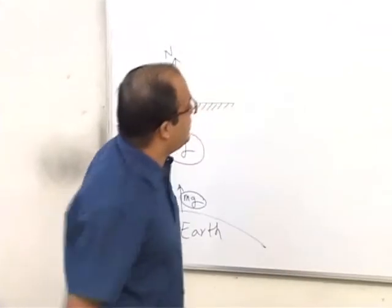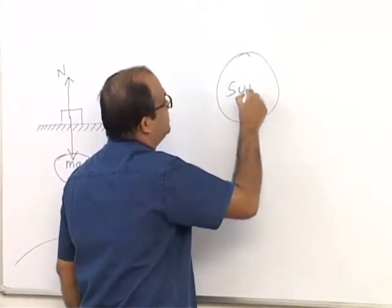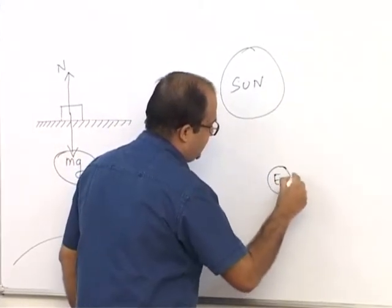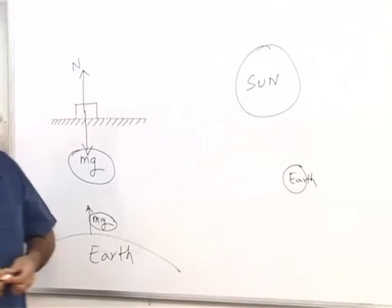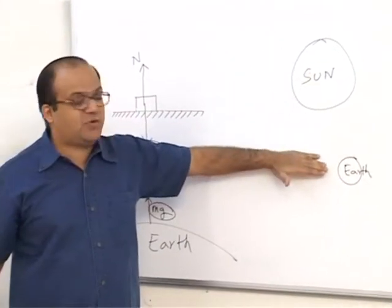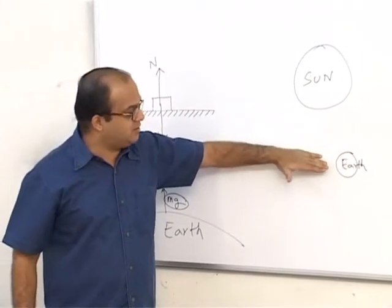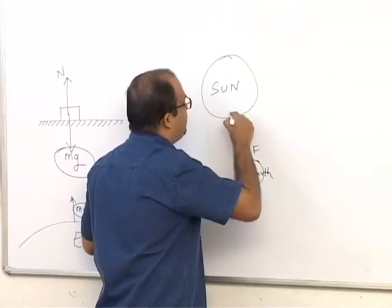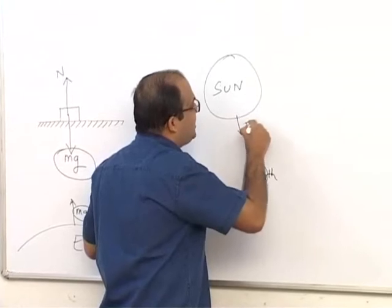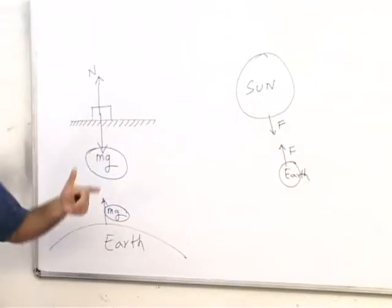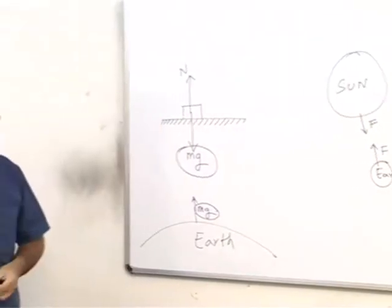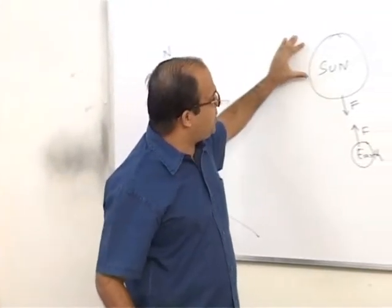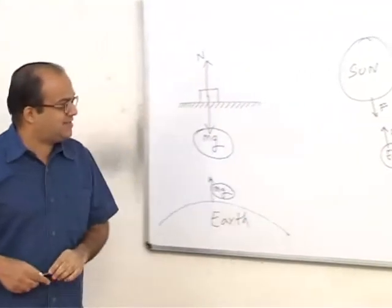Suppose we look at the sun and the earth. The sun is pulling the earth with some force. The earth is pulling the sun with an equal and opposite force. Both the forces are exactly same. They are Newton's third law pair. But the acceleration of the earth is more compared to the sun because the mass of the earth is less.